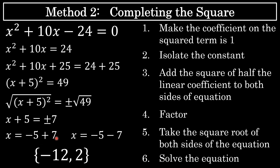Negative 5 plus 7 is 2, and negative 5 minus 7 is negative 12. We've arrived at the same solution as the factoring method — negative 12 and 2 — but this is the completing the square method.